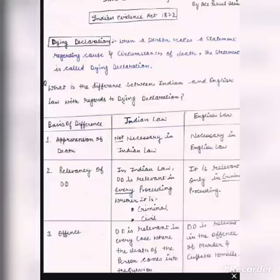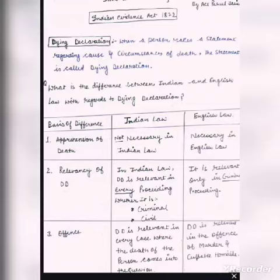Now we will talk about the difference between Indian law and English law with regards to dying declaration. The first basis of difference is apprehension of death. In Indian law, apprehension of death is not required before giving a dying declaration statement, but in English law it is required.